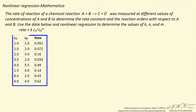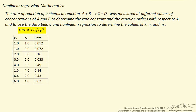We want to use these data to determine the values of n and m, which are the orders of the reaction with respect to A and B, and the value of k, the rate constant. We're going to switch over to the Mathematica program and look at how we do this.